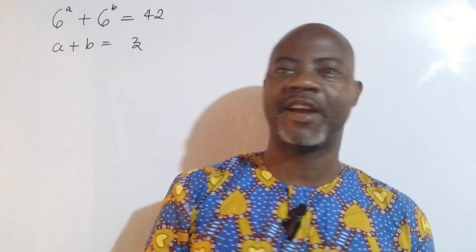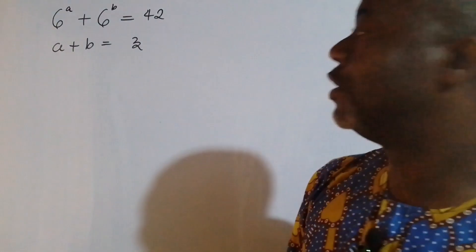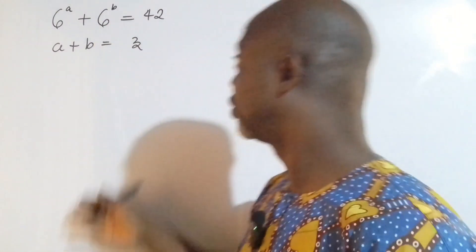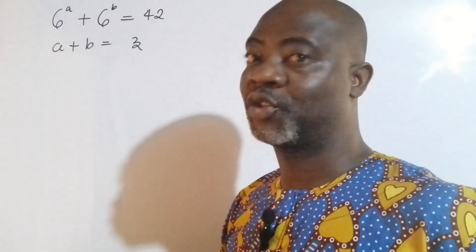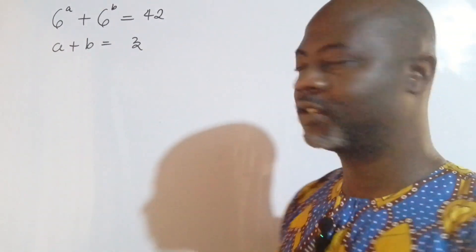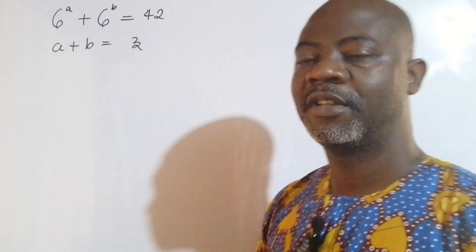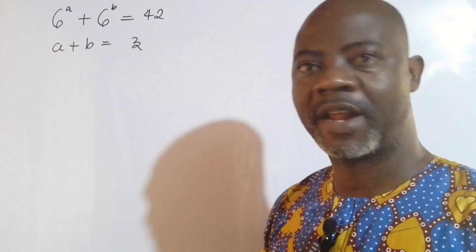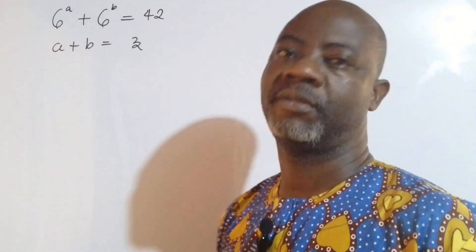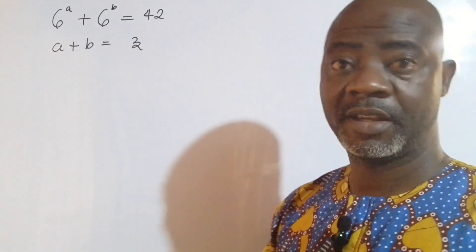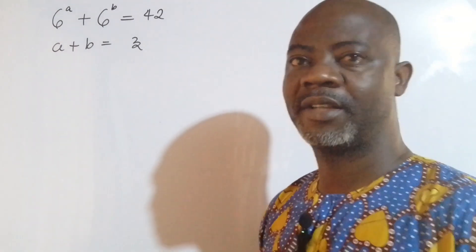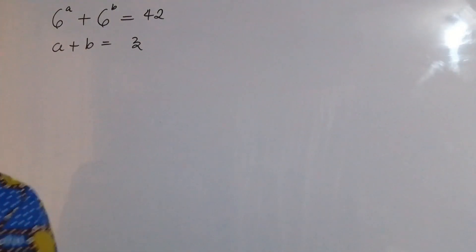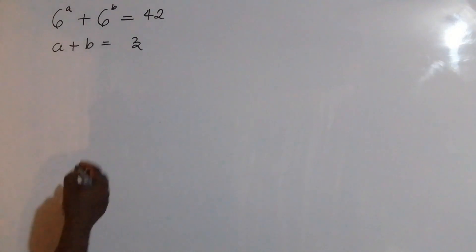Hello guys, welcome back to my YouTube channel. Today we have a beautiful exponential equation and one exponential, one linear. How do we solve this kind of problem? I'm going to be using two different methods. I'll use the first method, get an answer, then switch to the second method and see if we get the same thing. Let's get started and see how this can quickly be dispatched.